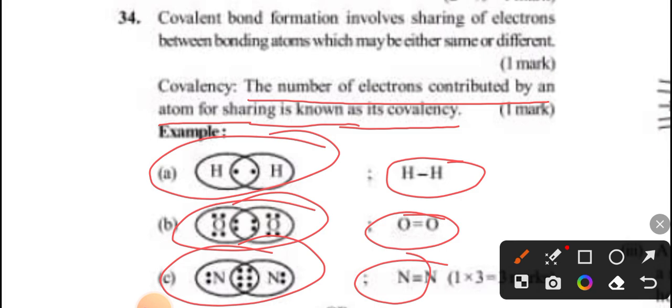Hydrogen-hydrogen has 2 electrons, oxygen-hydrogen has 4 electrons, and oxygen-oxygen forms a double bond. Okay?